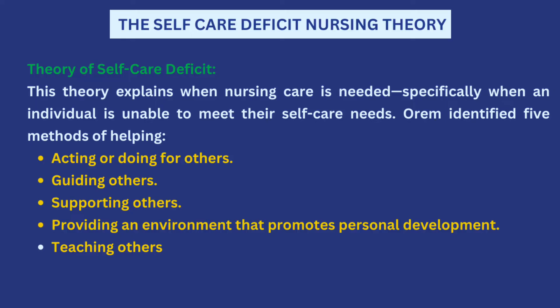The second part of the theory is the theory of self-care deficits, which is when the person cannot care for themselves and they need a nurse to help them. Dorothea Orem identified five methods by which a nurse can help a patient: acting or doing for them — what we would know as advocacy, ensuring the patient gets the best care — guiding them, supporting them, providing an environment that promotes personal development, and teaching.